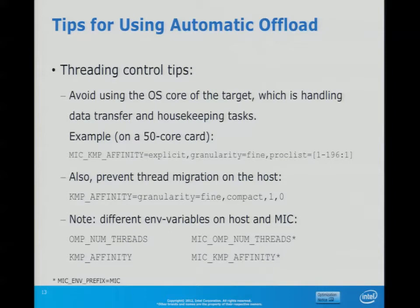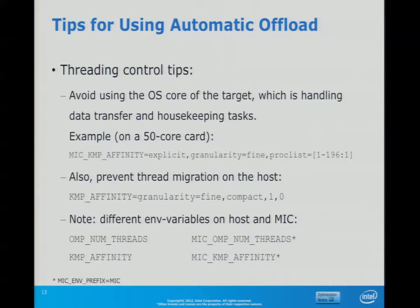The basic idea with runtime environment adjustment is that all host-side environment variables are replicated to the MIC side, but sometimes the same value doesn't make sense on the MIC. You can define a user-defined prefix — typically 'MIC' — and then set MIC_<variable_name> to adjust it individually for the MIC side. This works for OMP_NUM_THREADS and MKL_NUM_THREADS as well, giving you another level of control to mirror the OpenMP settings within MKL.